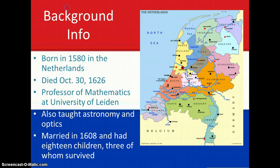Snell was born in 1580 in the Netherlands. He was born in the red region on the left side of the map located here, labeled South Holland. He was born in a small town known as Leiden, and he later taught there as professor of mathematics at the University of Leiden. He also taught astronomy and optics at the University.